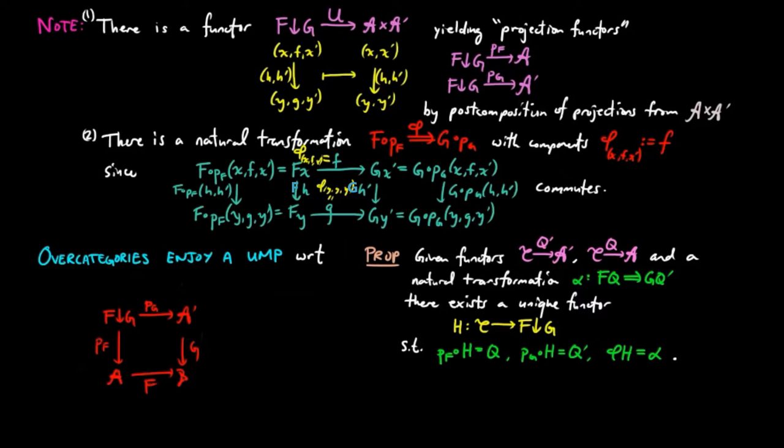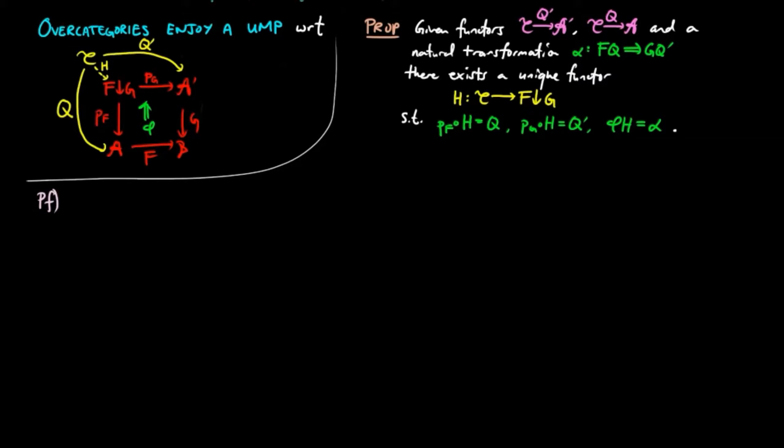For the proof, we define the functor h from c to f over g to take a c-morphism f from x to x prime, to qfq prime f from qx alpha x q prime x to qx prime alpha x prime q prime x prime.